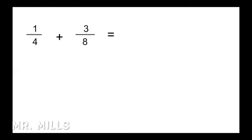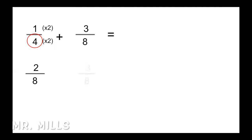Next: 1 quarter plus 3 eighths. We look at the denominators and go to the bigger number, which is 8. We expand the quarter: 4 times 2 is 8, and what we do to the bottom, we do to the top — 1 times 2 is 2. So 2 eighths plus 3 eighths equals 5 eighths. Again, 5 is odd and can't be divided by 2 to get a whole number, so we're done reducing.